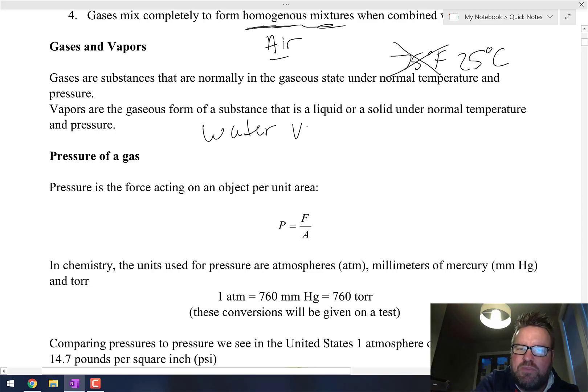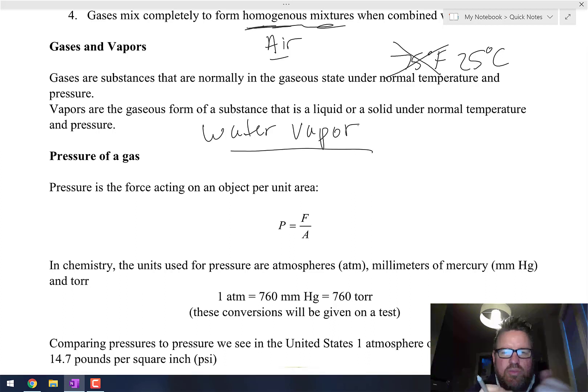A vapor is something that's not normally a gas at normal temperature and pressure. For example, water—you don't ever hear about water gas, but oftentimes you might hear the term water vapor. The reason it's called vapor is because water at normal room temperature and pressure is a liquid.